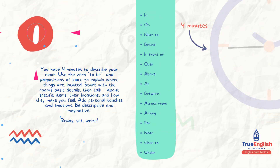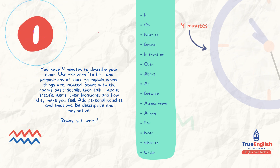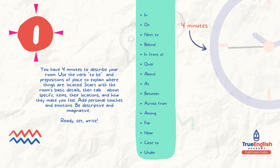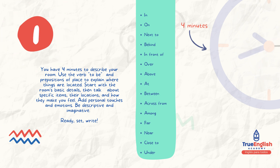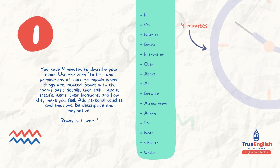You have 4 minutes to describe your room. Use the verb to be and prepositions of place to explain where things are located. Start with the room's basic details, then talk about specific items, their locations, and how they make you feel. Add personal touches and emotions. Be descriptive and imaginative.